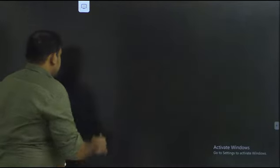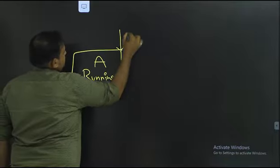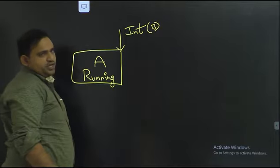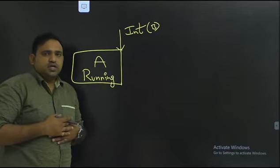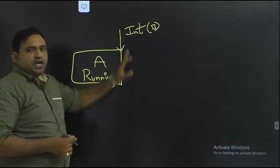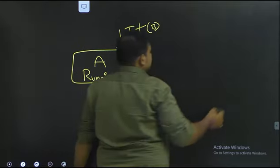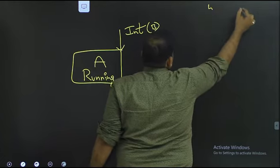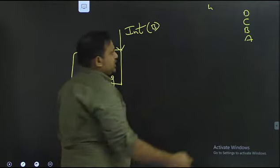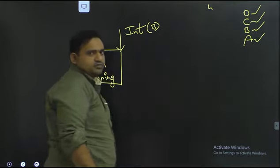For example, suppose a process A is running and we get interrupt B. If interrupt B has higher priority than A, we give priority — meaning importance — to B. The operating system assigns the order. For example, with four tasks, the priority order is: D is highest, C is second, B is third, and A is fourth. If interrupt B arrives and D is the highest priority, B is serviced only after D finishes.